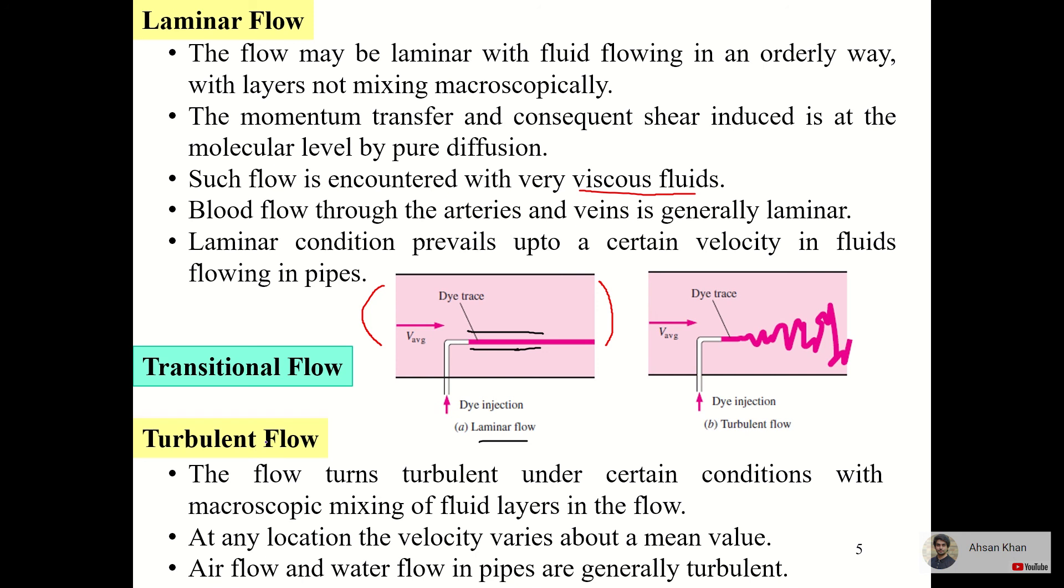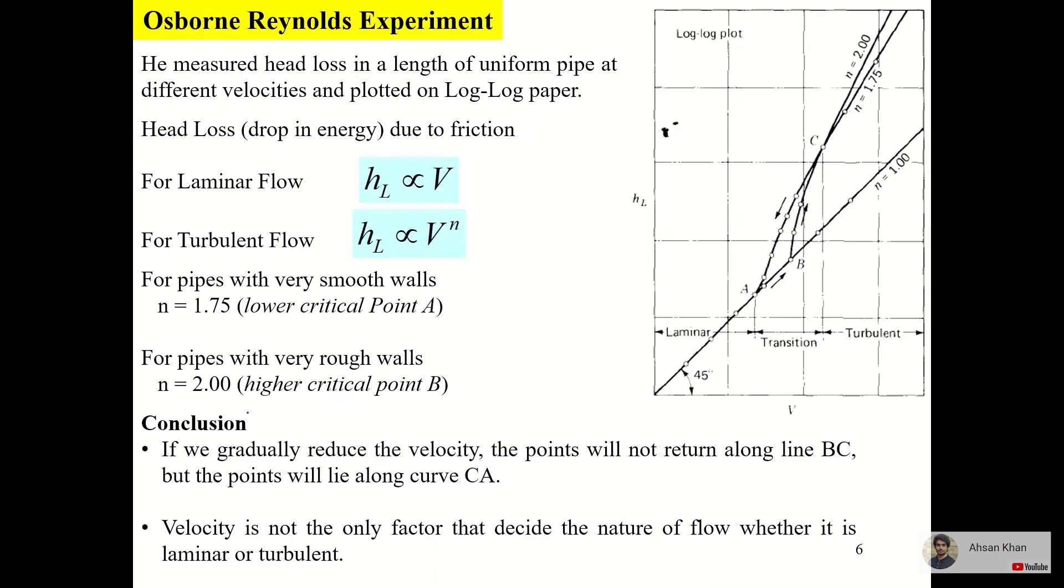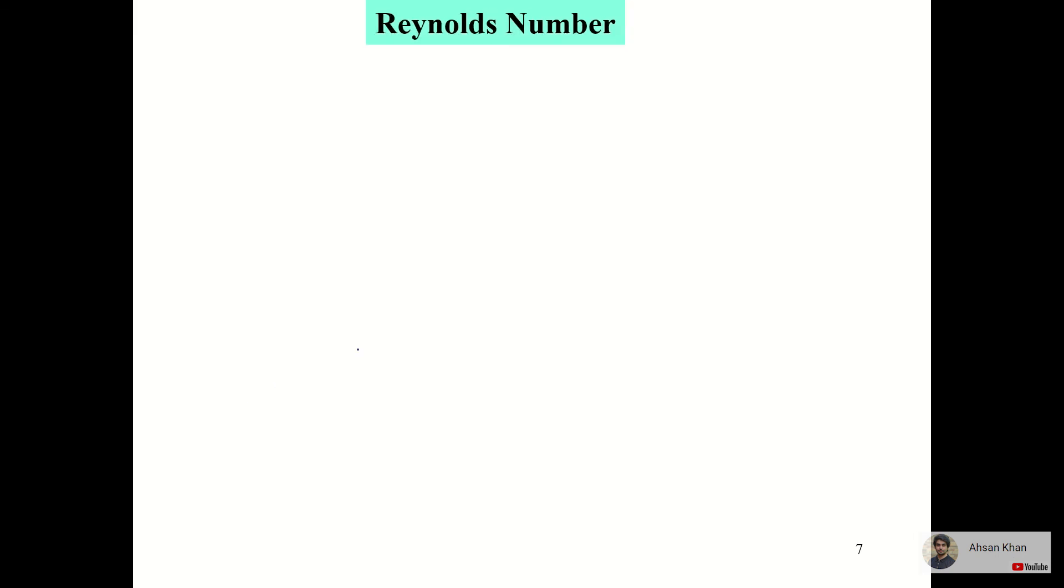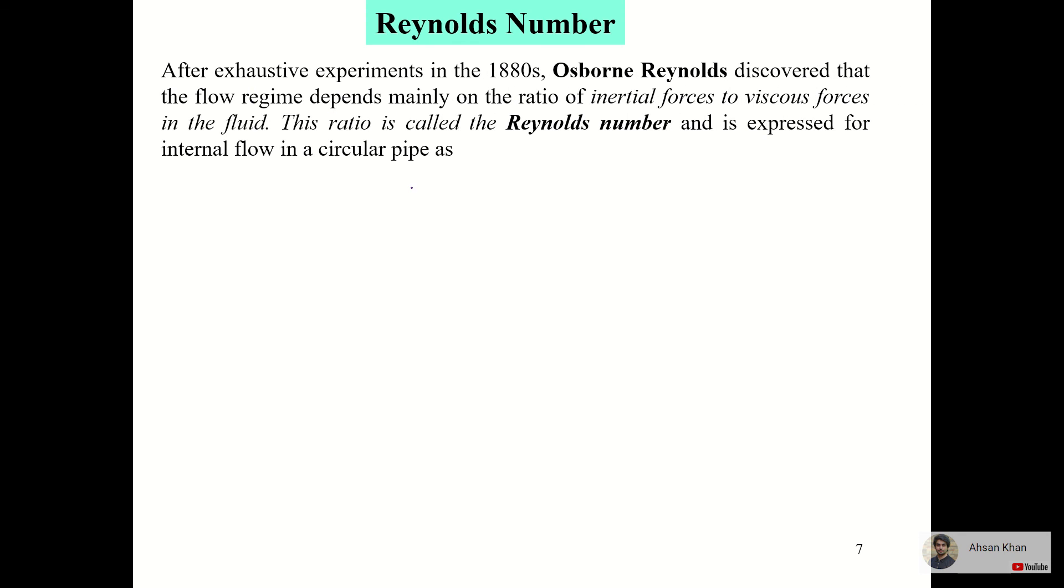For that we have a formula which is called Reynolds number. We will explain the Reynolds number in detail in the next lecture. We will explain how you would recognize this is laminar, turbulent, or transition by putting certain values which are the characteristics of the flow of that fluid flowing in that pipe.